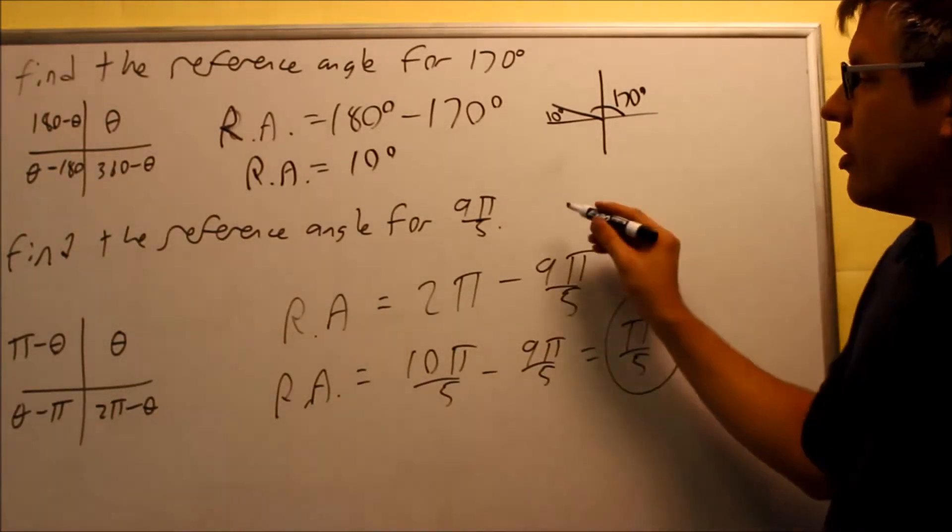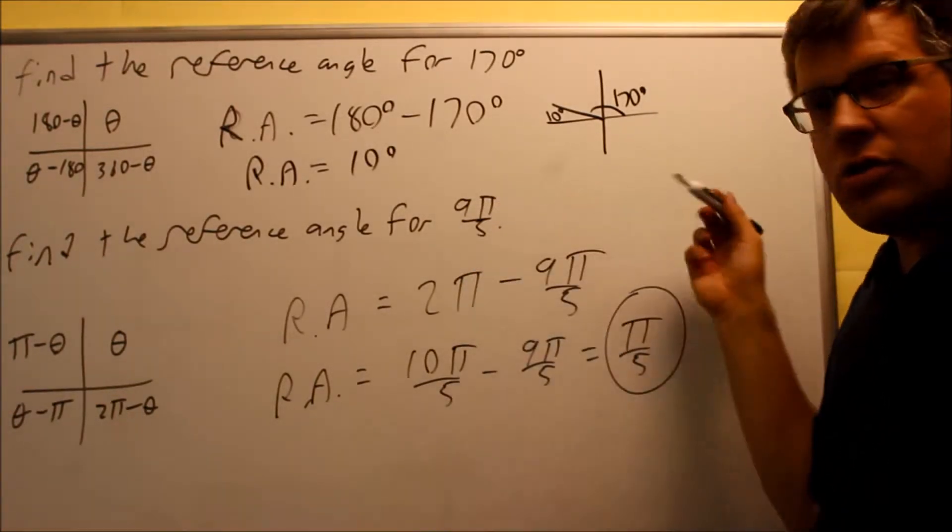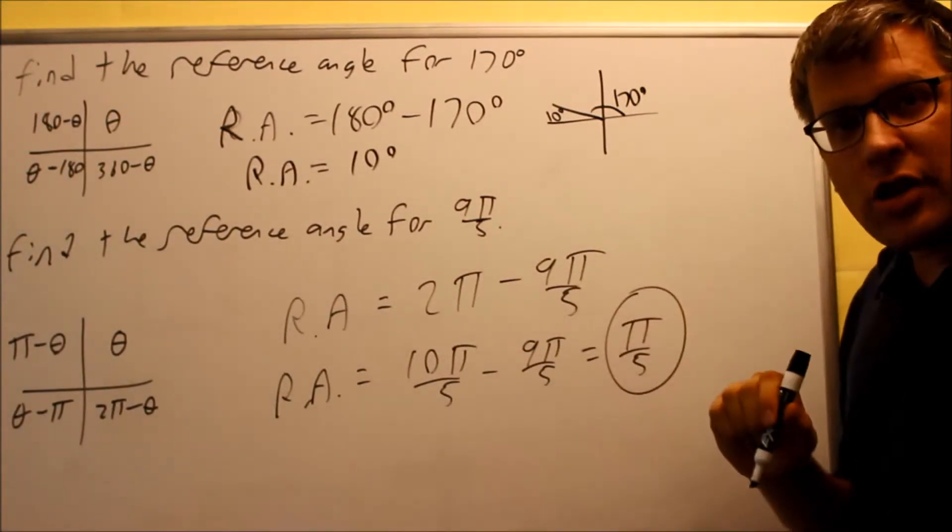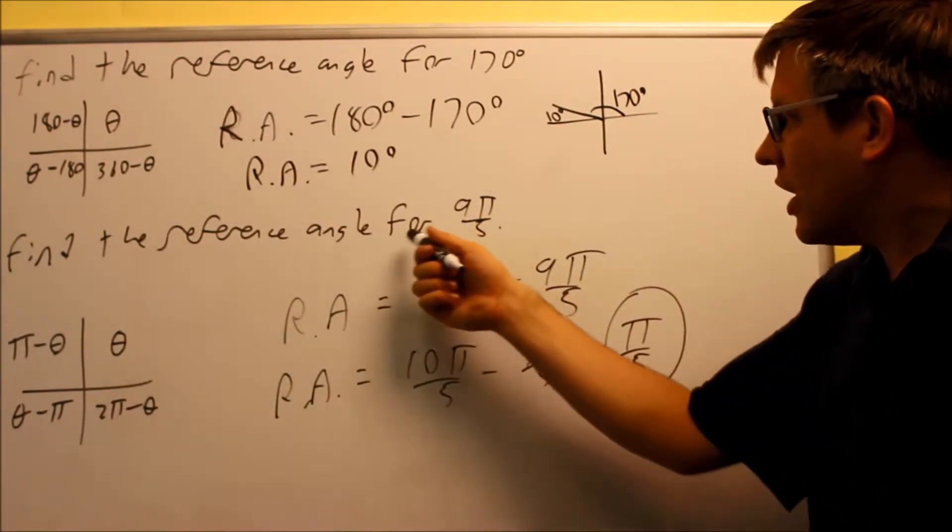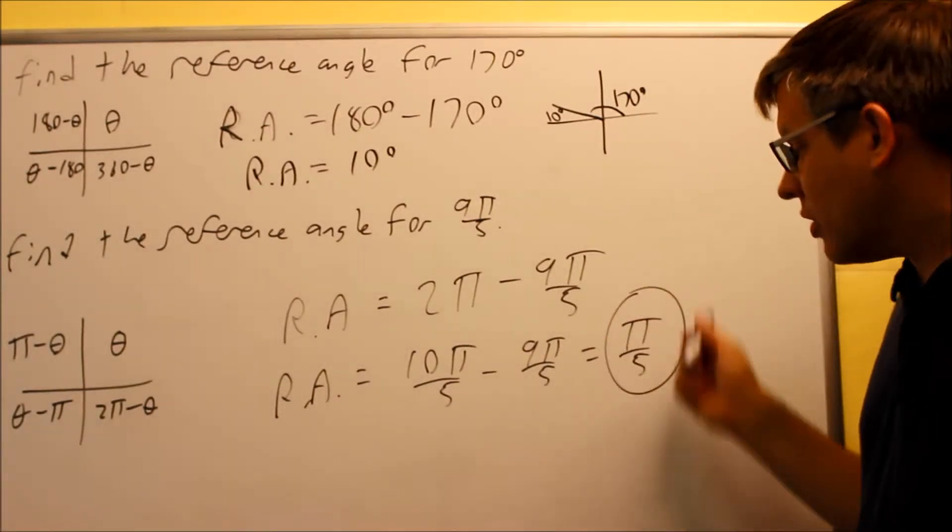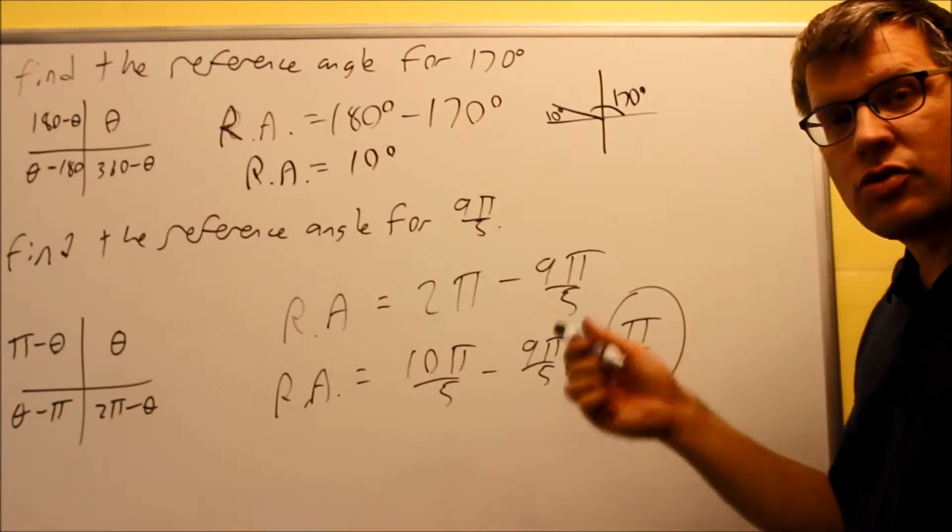Again, you can either, if you wanted to do it alternately, I could have changed this into degrees and then done the whole problem in degrees, and then probably want to change the answer back, because typically if they give you the original angle in radians, that means that's how they want you to write your reference angle in the same degree measurement as that, so we could just change it back.